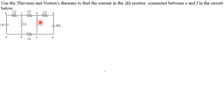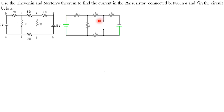They are saying we should use Thevenin's and Norton's theorem to calculate the current through this branch. To calculate the current using Thevenin's theorem first, I will use Thevenin's theorem, and afterwards I will use Norton's theorem. We will take the 2-ohm resistor out, open-circuit those terminals, and name them E and F, labeling the open-circuit voltage as VTH.